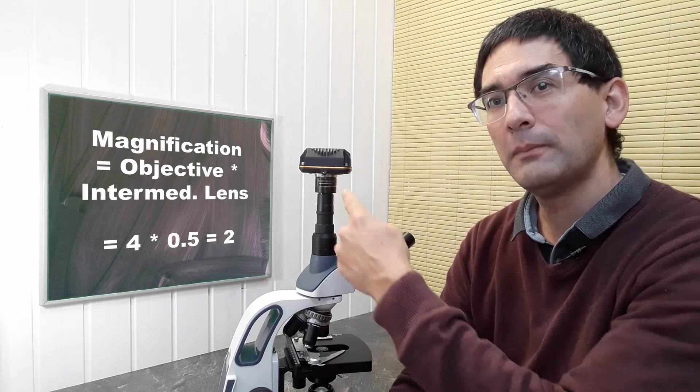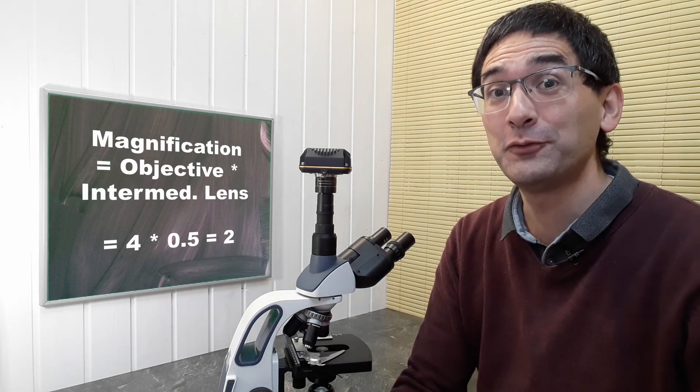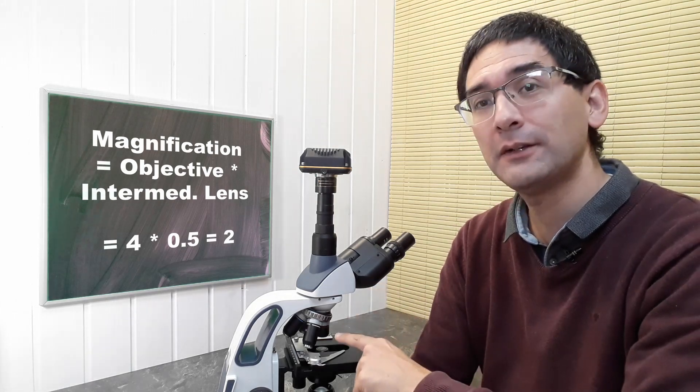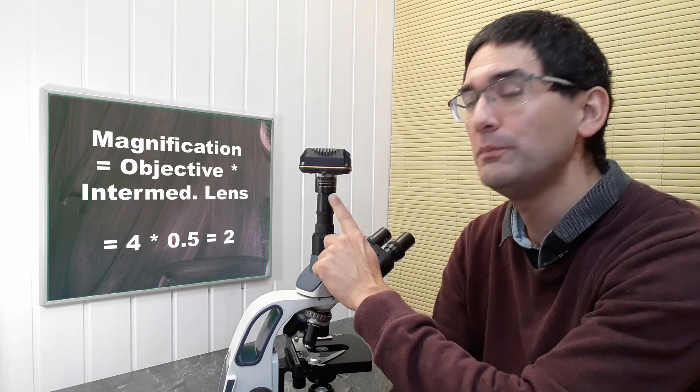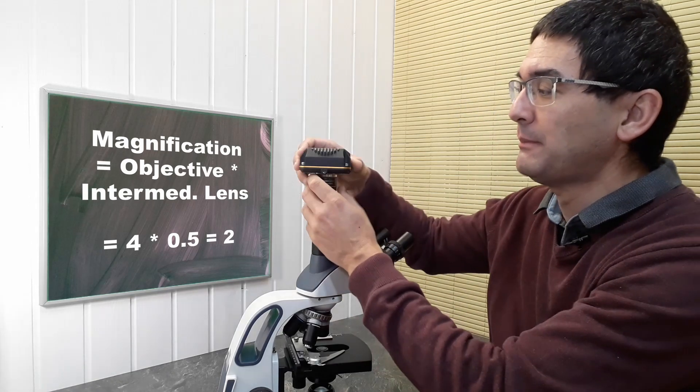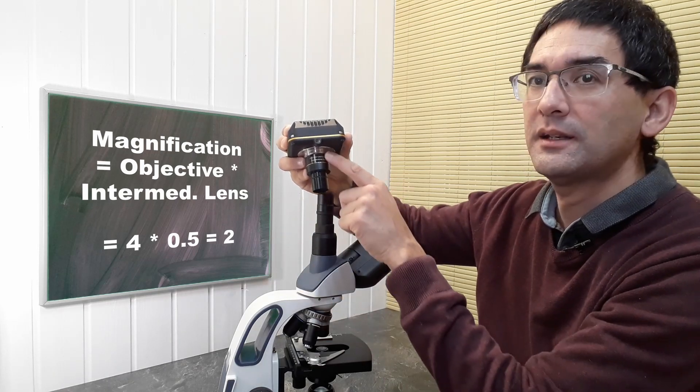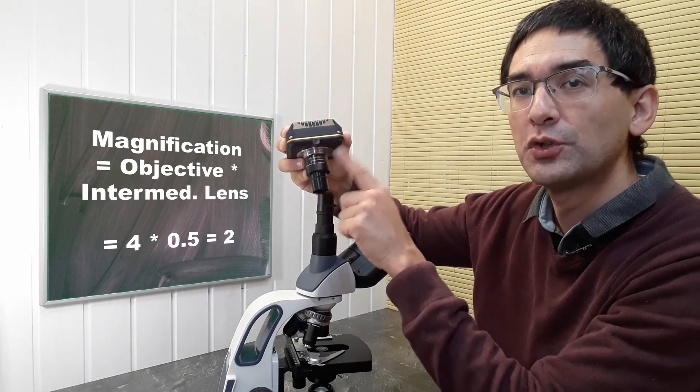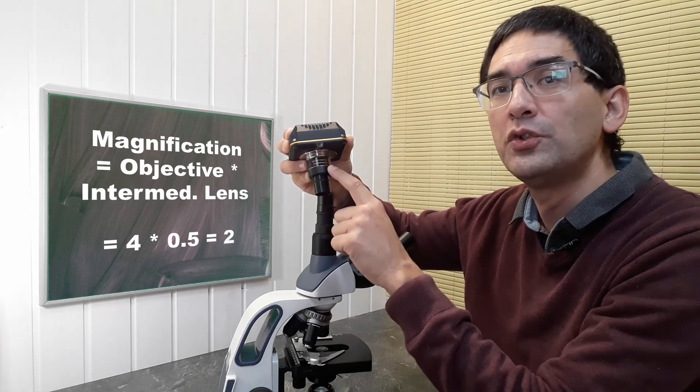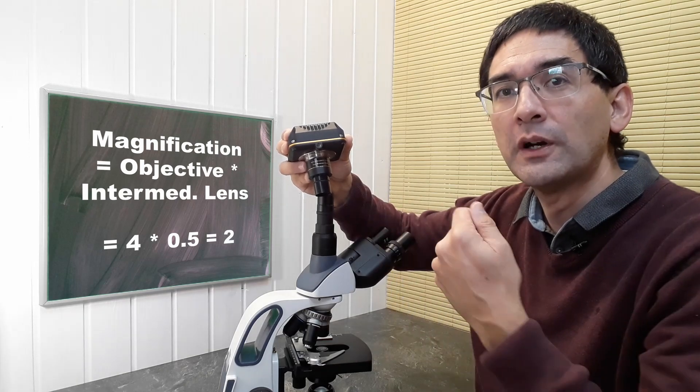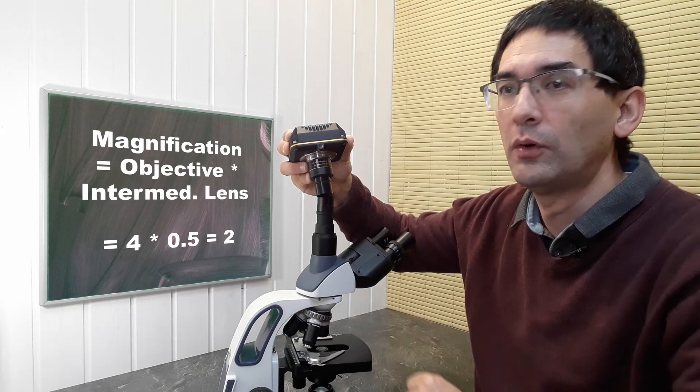To calculate the total magnification of the optical system is quite easy. We multiply the magnification of the objective by the magnification of the intermediate optics. If you have a microscope camera, this intermediate optics has a certain magnification factor, usually around 0.3 or 0.5 depending on the size of the sensor.